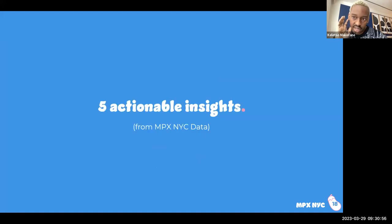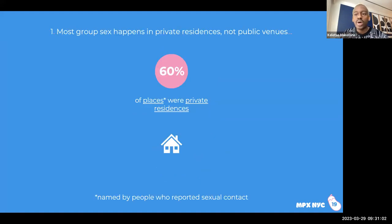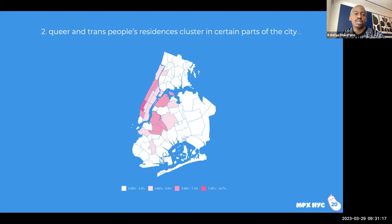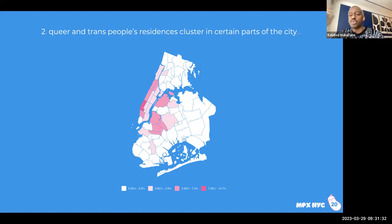Five things you can glean from the data so far. First: most group sex happens in private residences, not public venues — as I had thought coming in. This means if you build your response strategy around public sex venues like bars or clubs, you're going to miss the majority of where the action is. Second: queer and trans people are clustered across the city in neighborhoods that are safer and have more infrastructure and fun things to do for queer people.